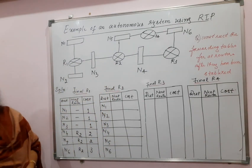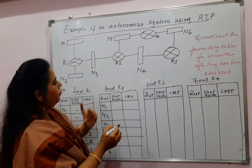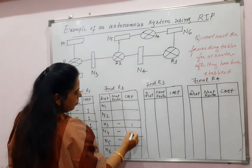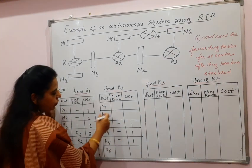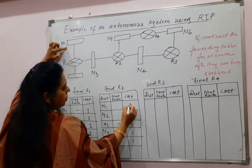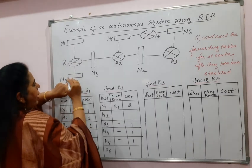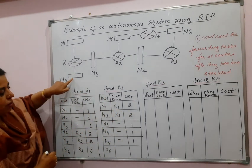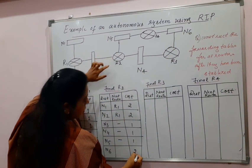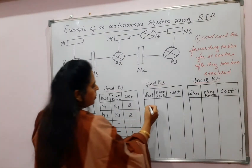Now for R2: identify which networks are directly connected to R2 — those are N3, N4, and N5, each with cost one. For N1, it is two hops from R2 and must go via R1, so cost is two, next router R1. For N2, similarly cost is two and next router is R1. For N6, the cost is two and it has to go via R3, so the next router is R3.